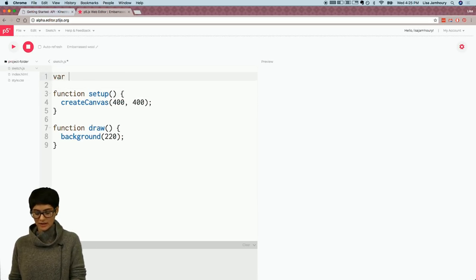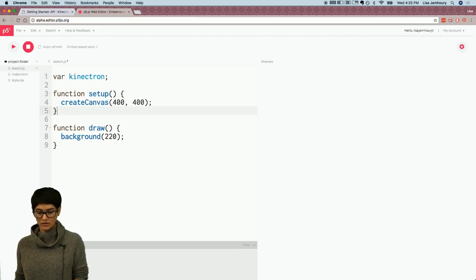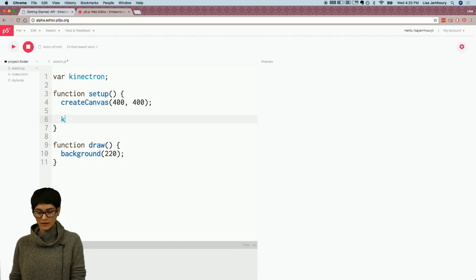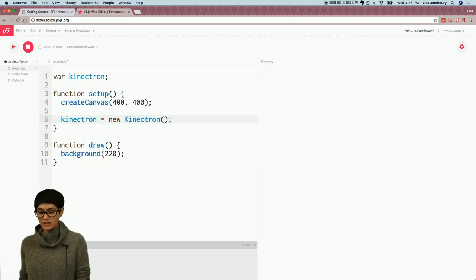And now I have the Kinectron API included in my code. So I'll head back over to sketch.js. And I'll start by saying, by just creating a Kinectron variable. And then in my setup, I'll make my Kinectron a new Kinectron. Now just a note here, the Kinectron will actually, if I were coding on the same exact computer where my server is attached, if I just declare the Kinectron like this with no IP address in it, it'll automatically connect to the server that's running on the same computer. But because they're running on two different computers, I need to put the IP address here of my Kinectron server.